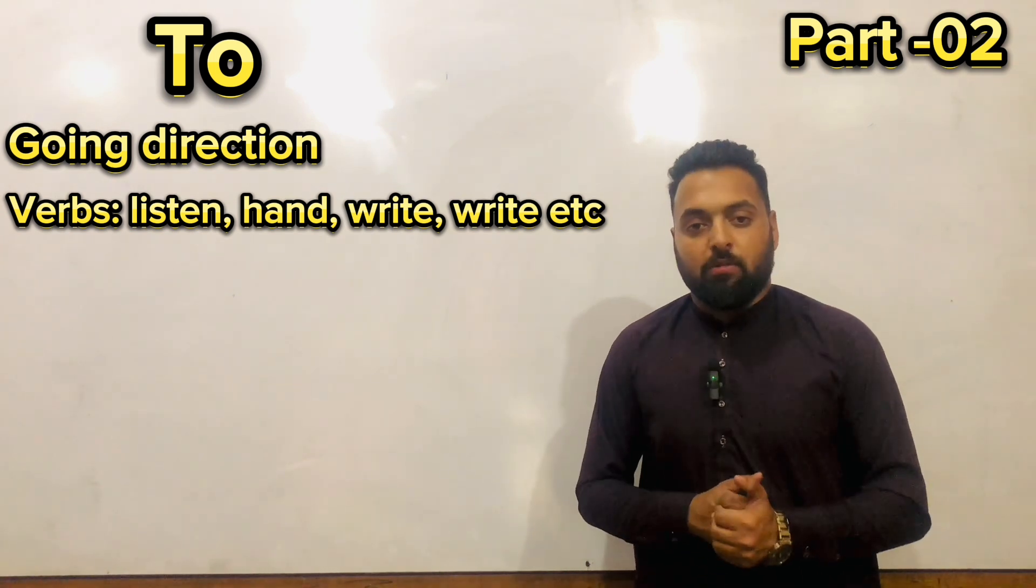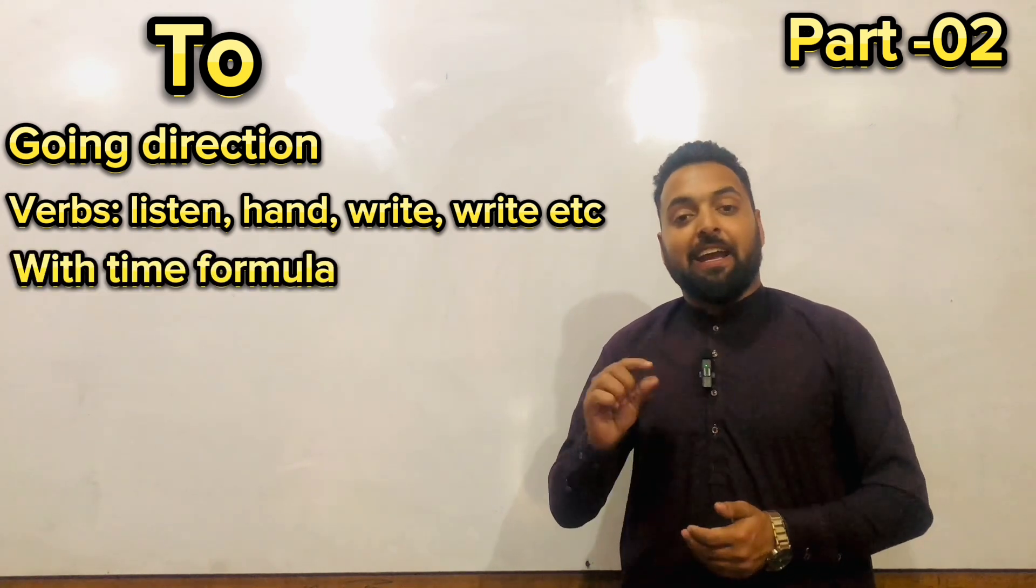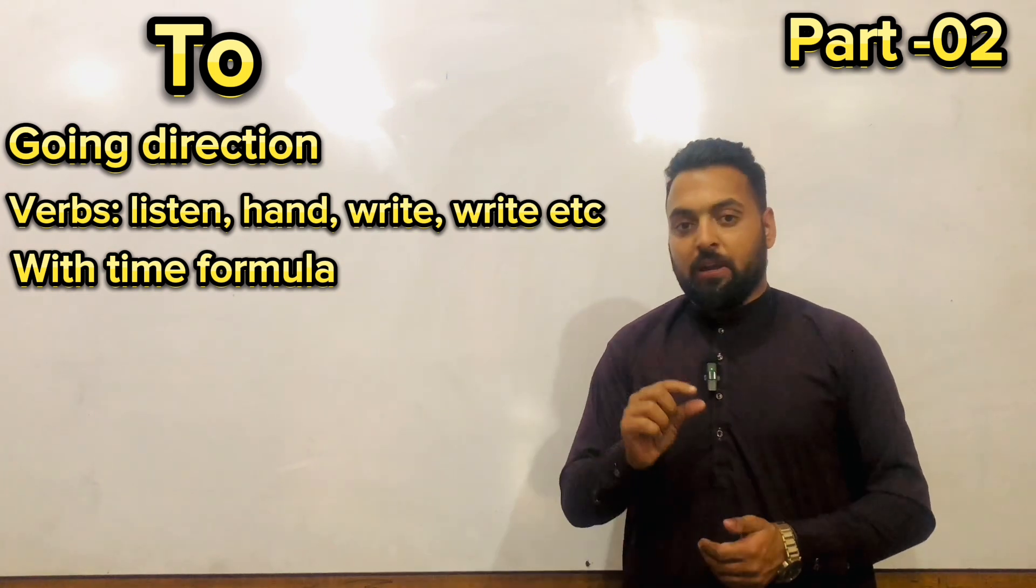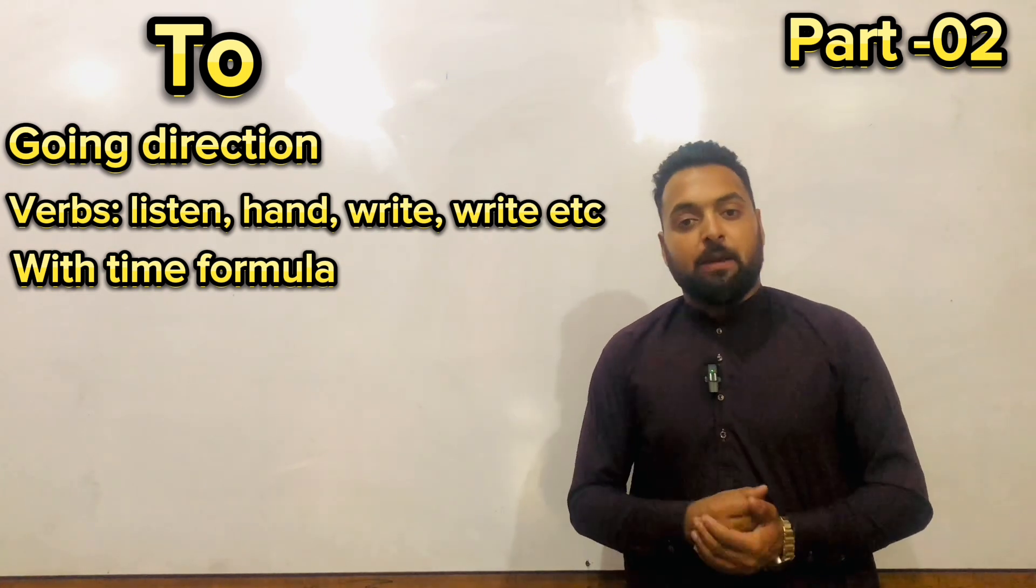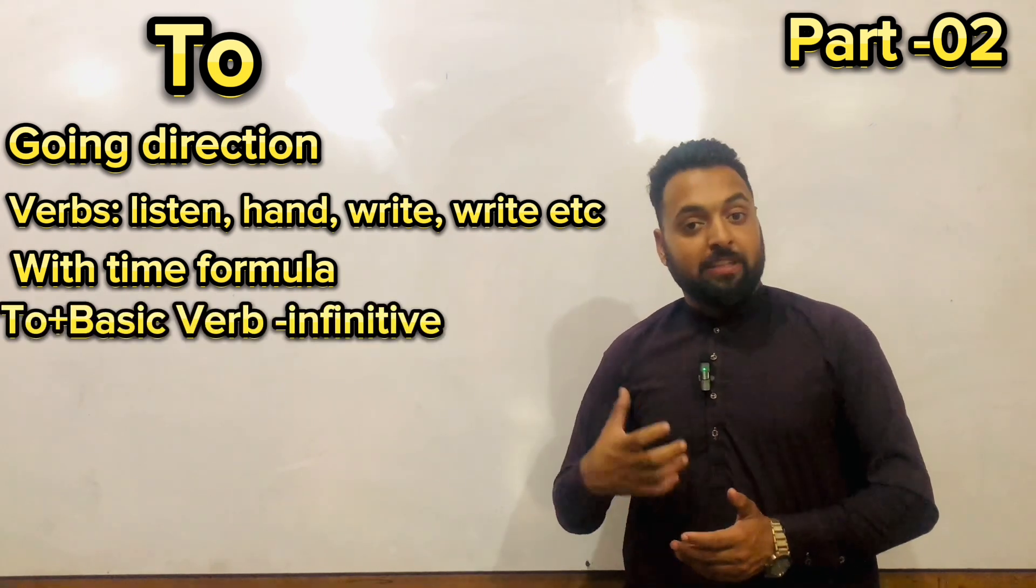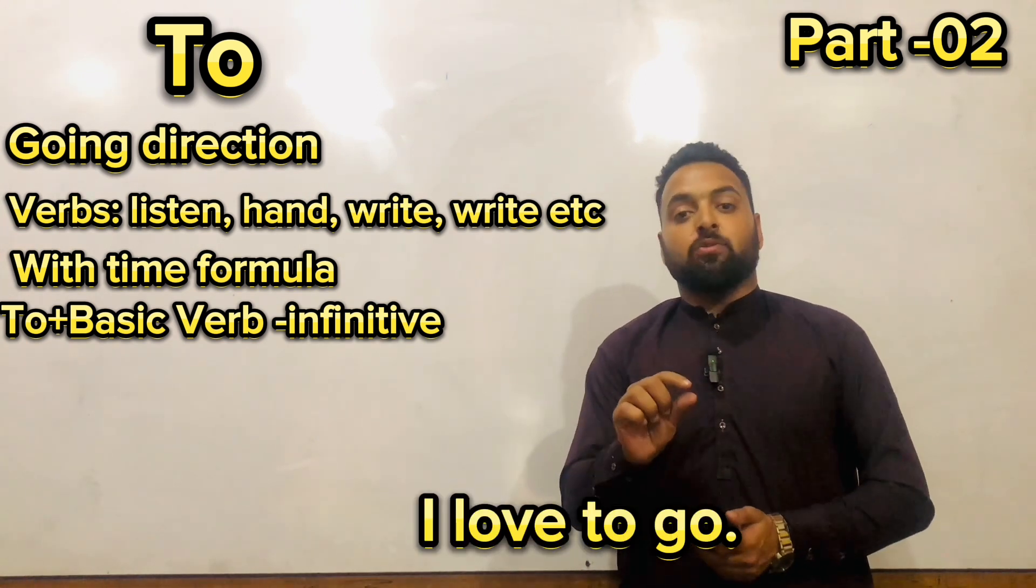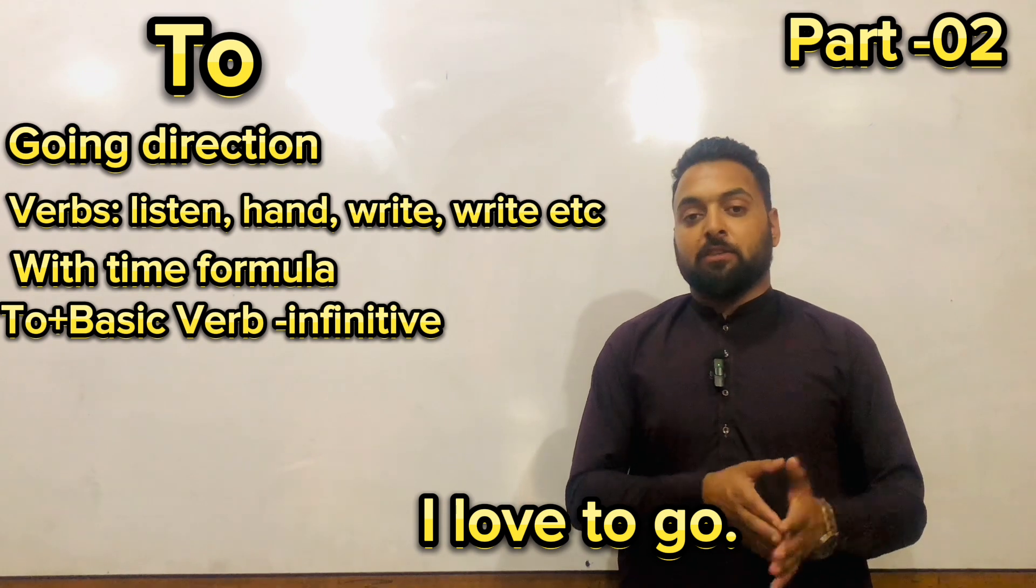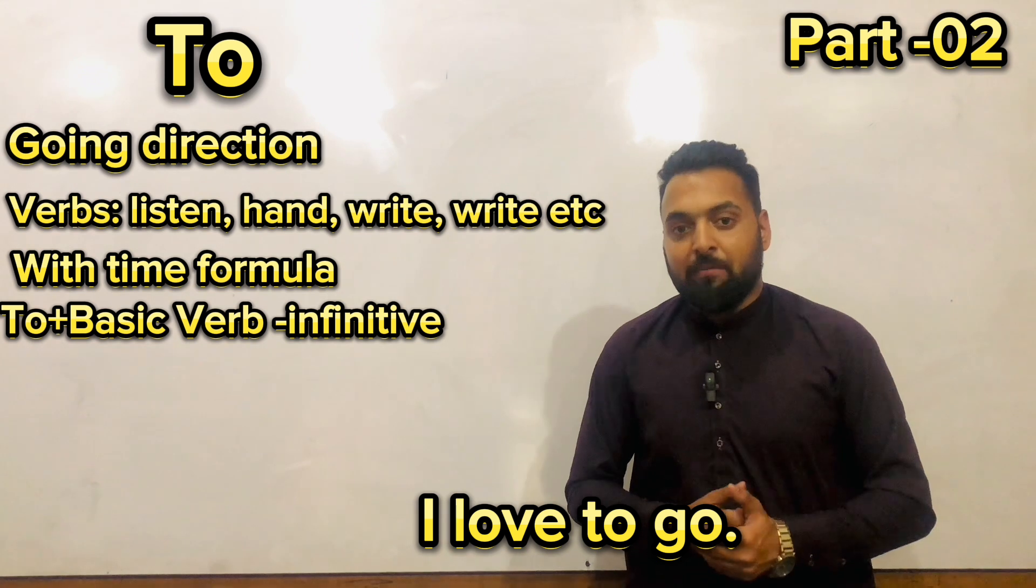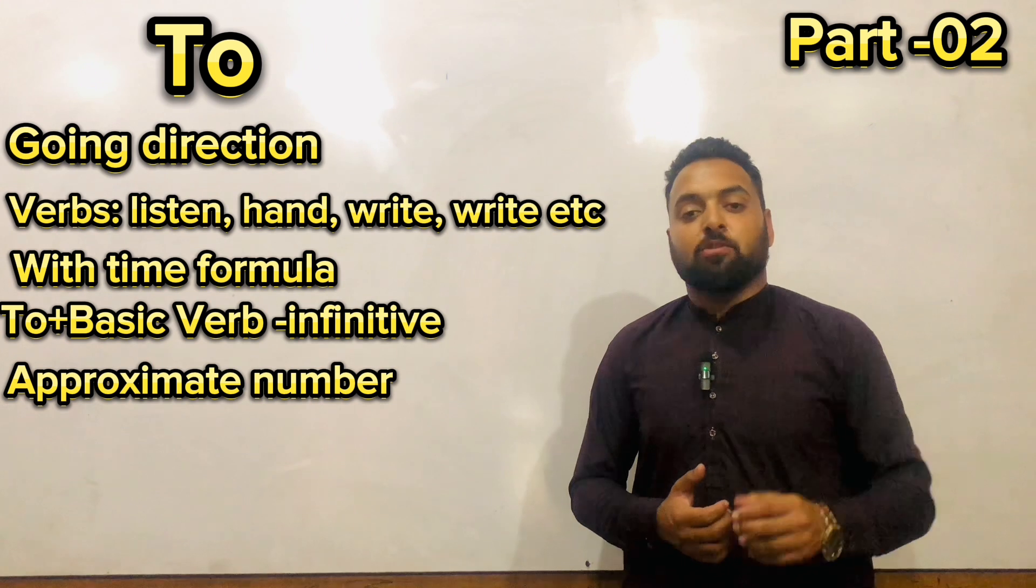In time formula, for example, it is 8:45, so you just call it quarter to 8. So 'to' you know in time formulae ke saath bhi استعمال kar sakte ho. You can also be used as an infinitive. You have to go as an infinitive. So he can cut the gate. 'To' approximate number ke liye use karte hain.